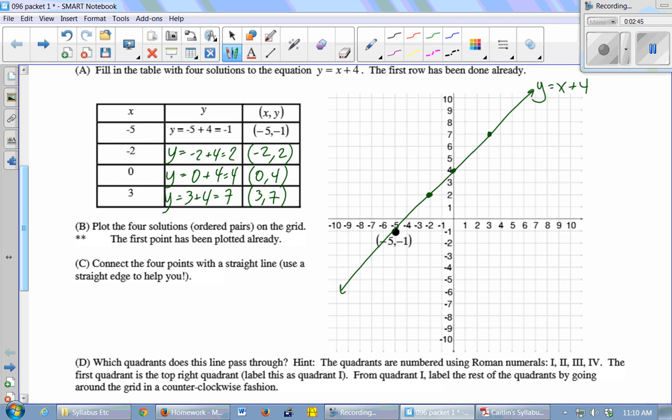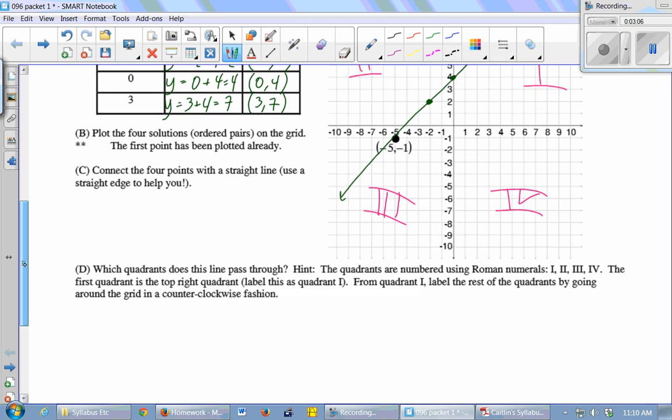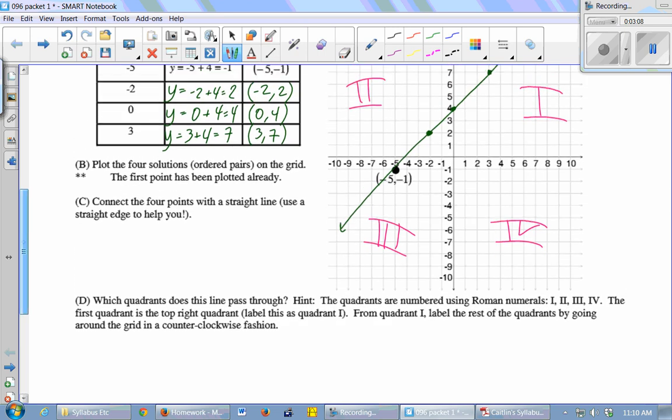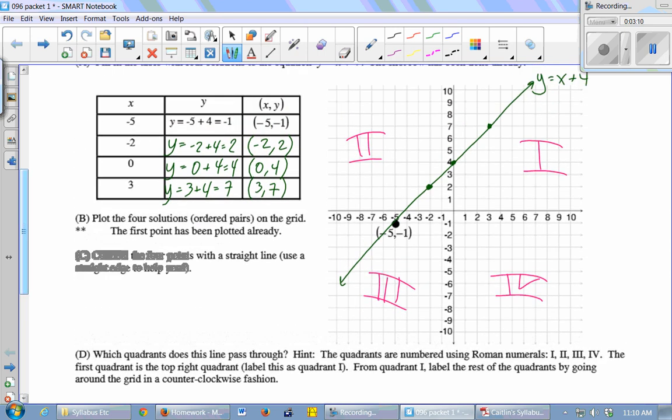What quadrants does this line pass through? 1, 2, and 3. Good, yeah. So the quadrants, you start in the upper right, and that's quadrant 1, and then you number them counterclockwise. So this is 2, this is 3, and this is 4. And traditionally, they're labeled with Roman numerals. I don't know why. Seems silly, but that's what we do. So that line goes through quadrant 1. It's in quadrant 2 for a little bit, and then it's in quadrant 3 for the rest of the time.